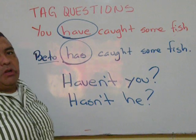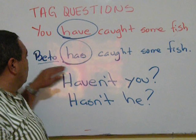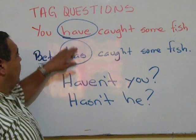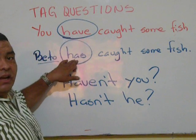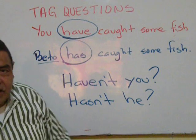So, whenever we talk about I, you, we, they, we use have. And whenever we talk about he, she, it, we use has. Easy as that.